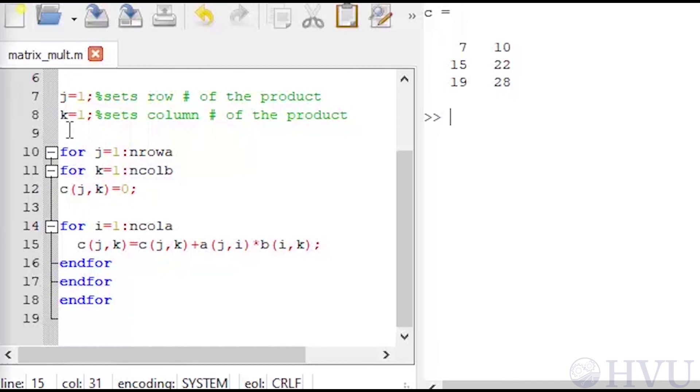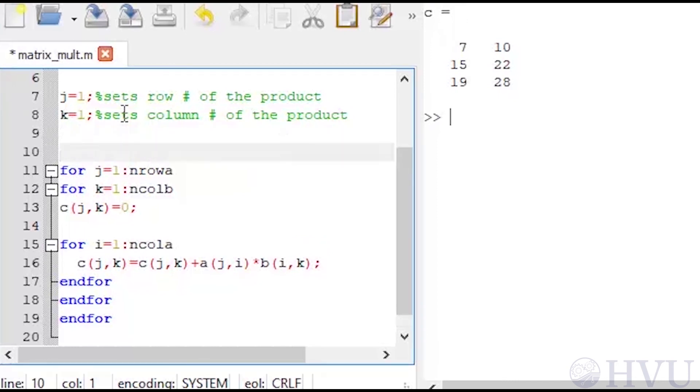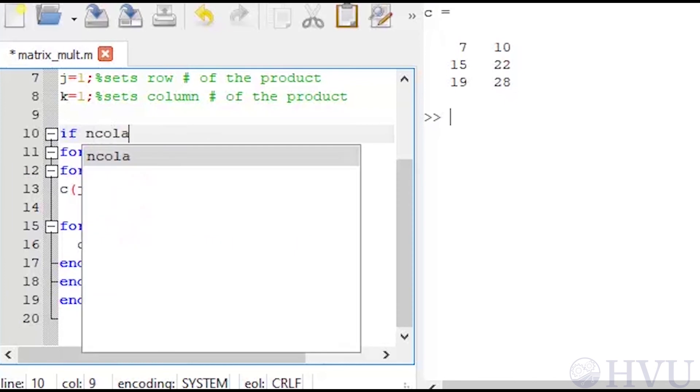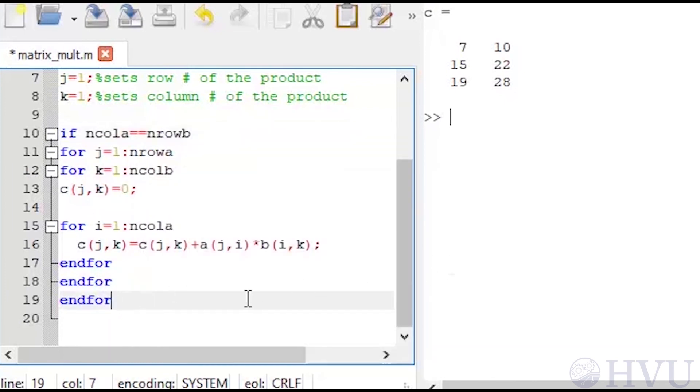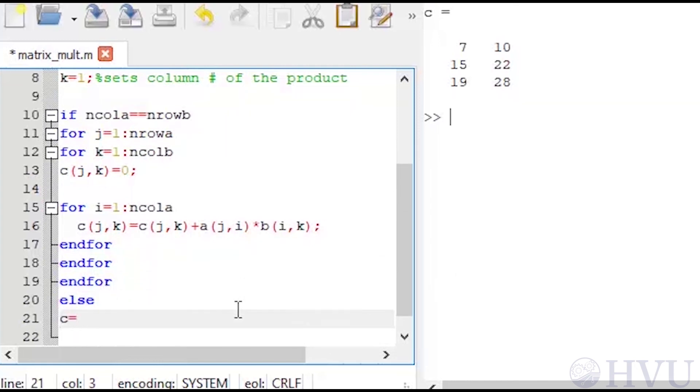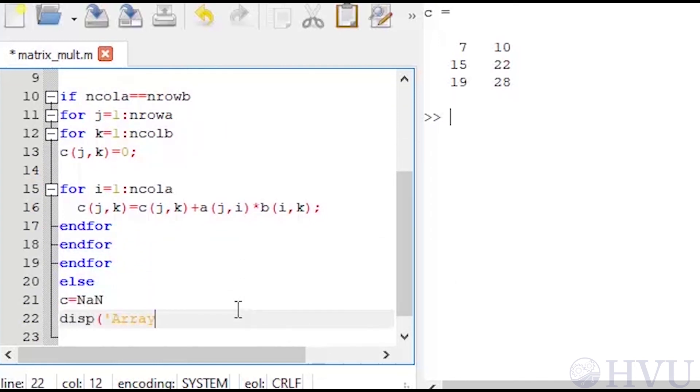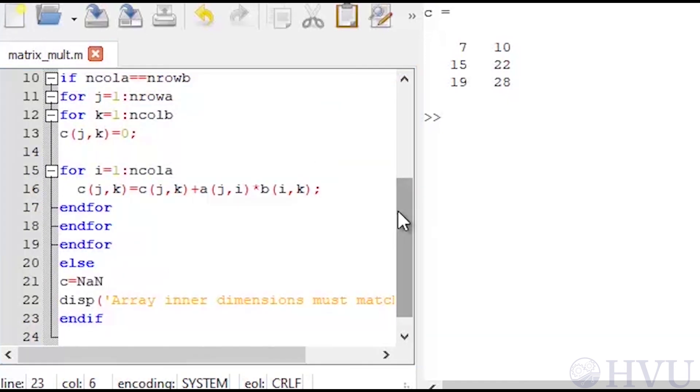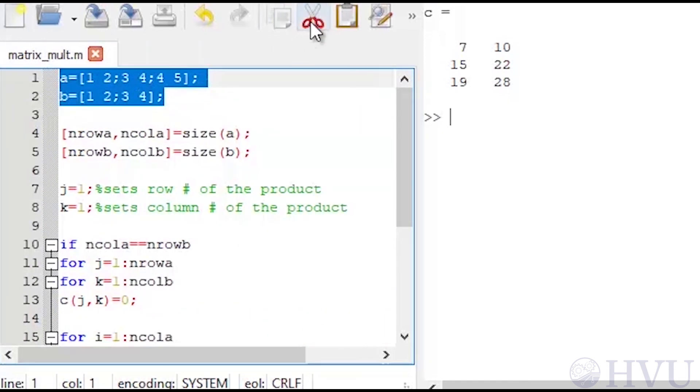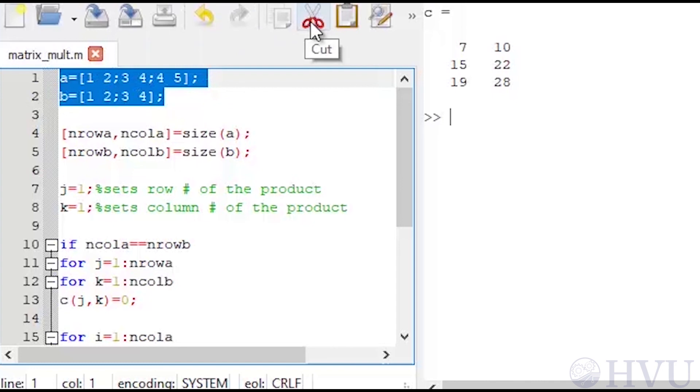Finally, I'll add some error checking to make sure that the number of columns of A is the same as the number of rows of B. If this is true, I'll do the multiplication. But if it's false, I'll set c equal to not a number and display an error message. Finally, I'll add a function declaration statement and eliminate the definition of A and B in the function, and save the file.